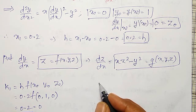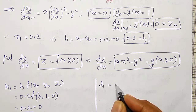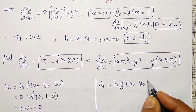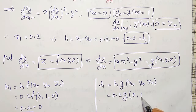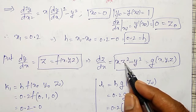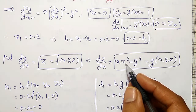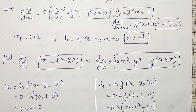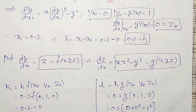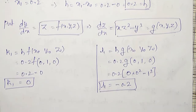Then I have to find l1. l1 = h · g(x₀, y₀, z₀) = 0.2 · g(0, 1, 0). The function g(x, y, z) = x·z² − y². So g(0, 1, 0) = 0·(0²) − 1² = −1. Therefore l1 = 0.2 × (−1) = −0.2.